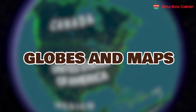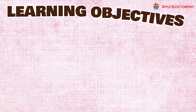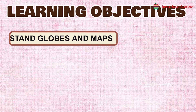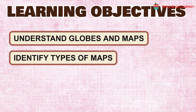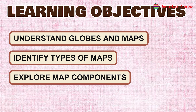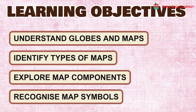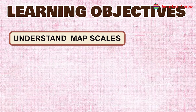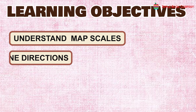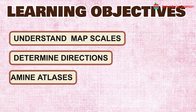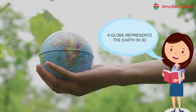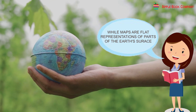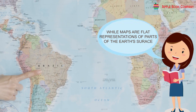Globes and Maps. Learning Objectives: Understand globes and maps, identify types of maps, explore map components, recognize map symbols, understand map scales, determine directions, and examine atlases. A globe represents the earth in 3D, while maps are flat representations of parts of the earth's surface.